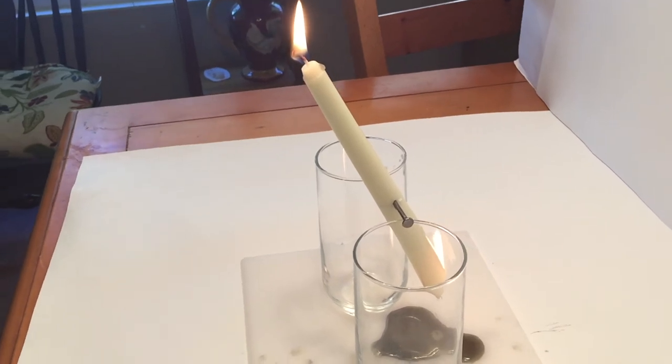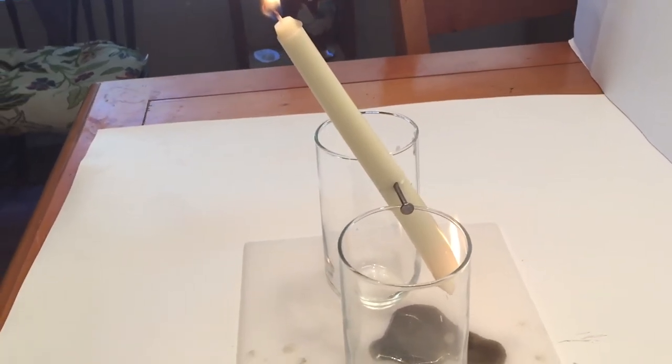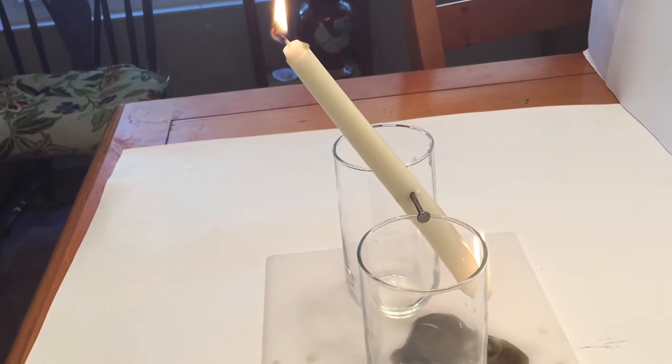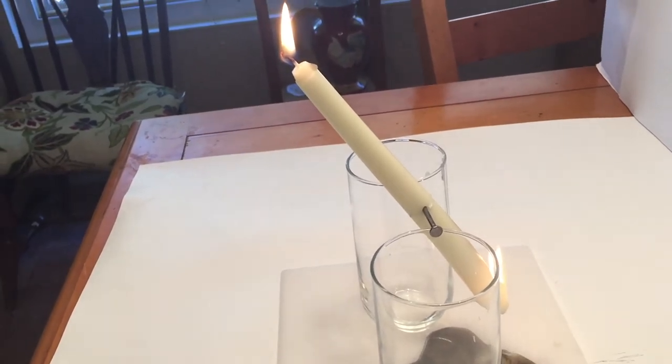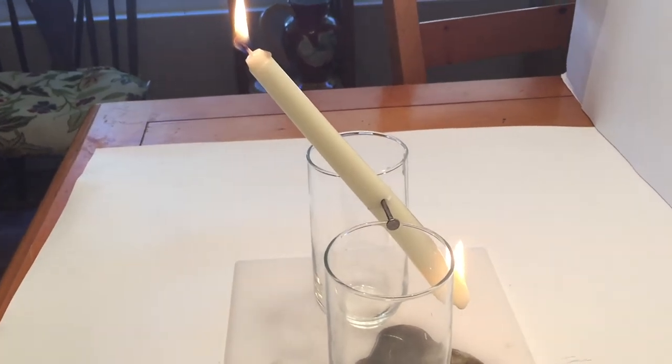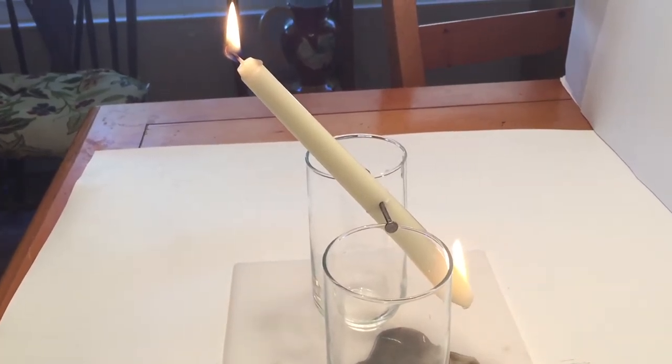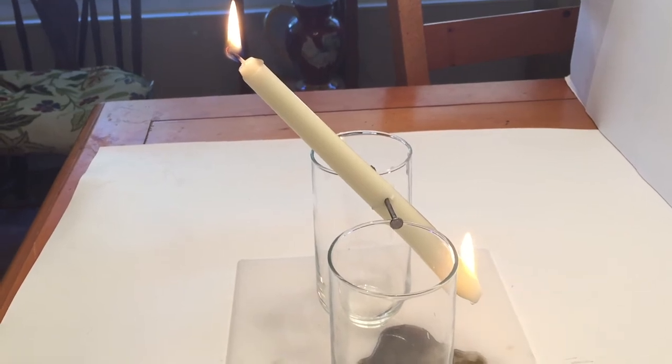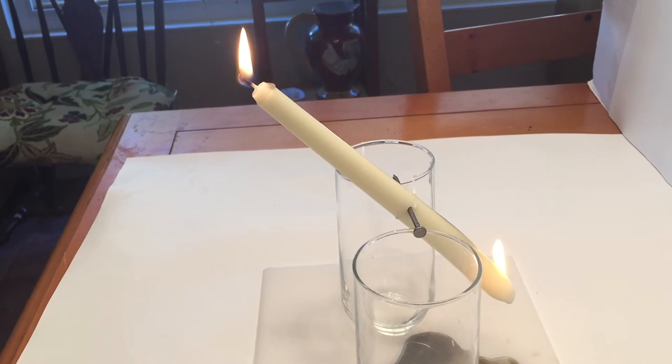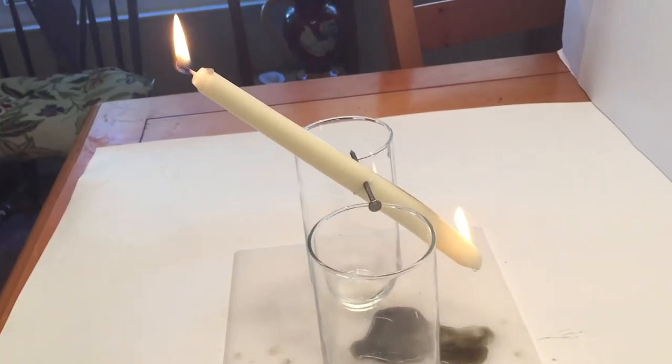If one end of the candle burns more quickly than the other, the lighter side of the candle moves up. The lower side of the candle will angle such that the flame melts the wax, causing it to drip down. This not only lessens the mass at the end of the candle, but the forces from the dripping wax actually push the end of the candle up. This is Newton's third law of motion, which states for every action there's an equal or opposite reaction.